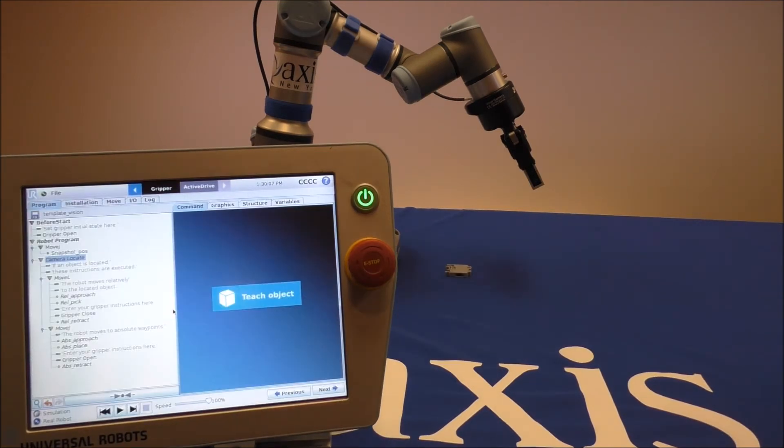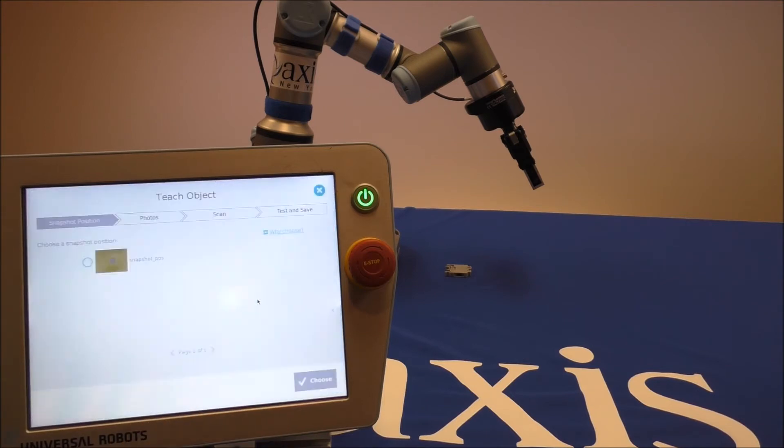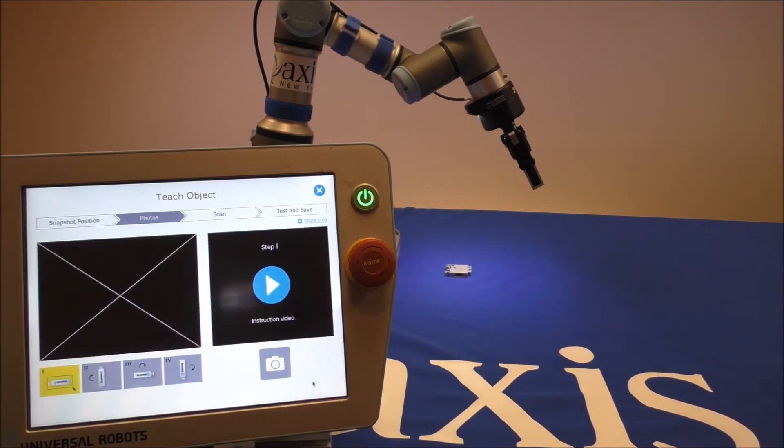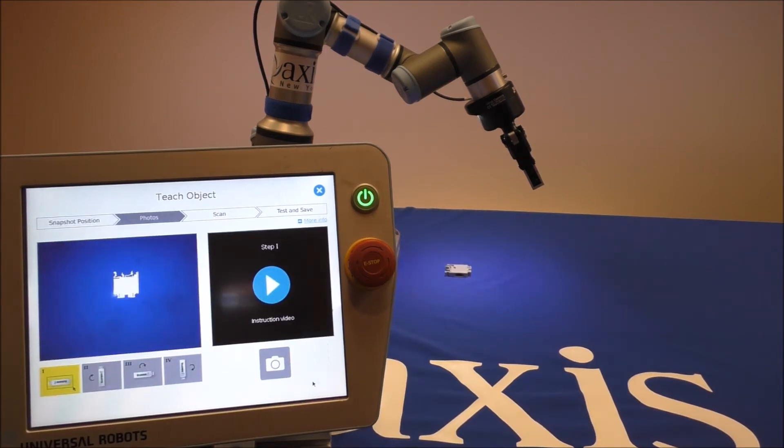Now that we have our snapshot position defined, we're going to teach our object. We're going to select the snapshot position that we have defined, and now we're going to teach the part. We're going to move this at 90 degree increments from zero to 270 degrees to teach the part in four ways.